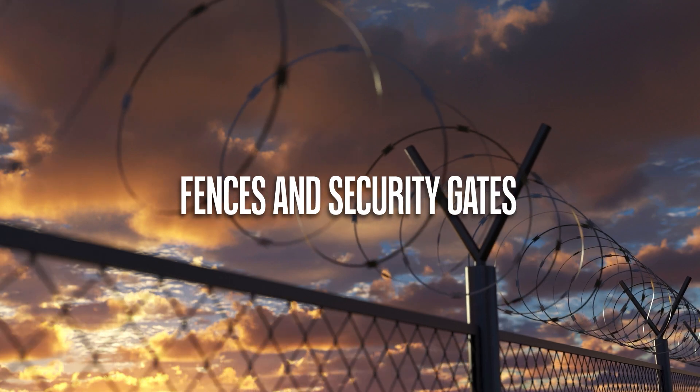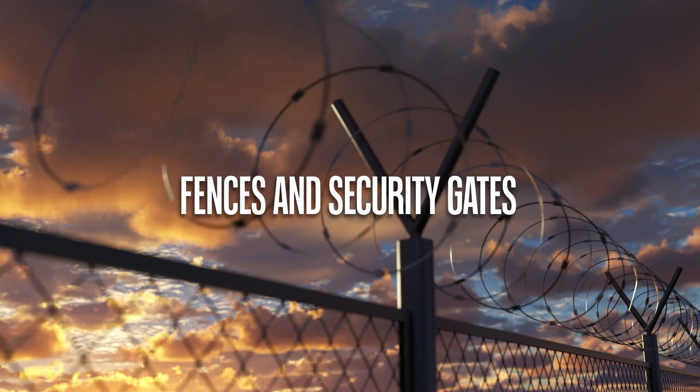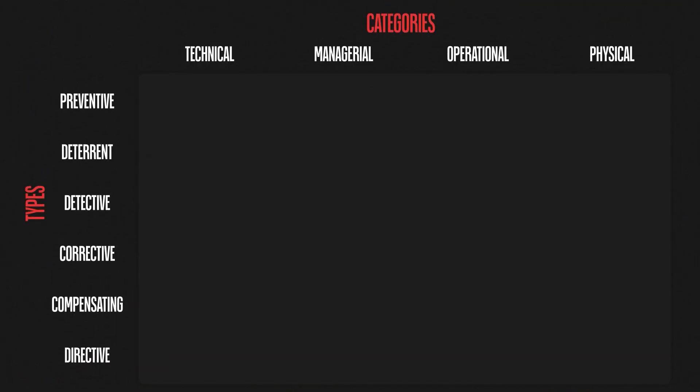Now that we've looked at the high-level control categories, let's look at the different control types. There are six control types: preventative, deterrent, detective, corrective, compensating, and directive. Preventative controls are designed to stop or prevent security incidents before they happen.